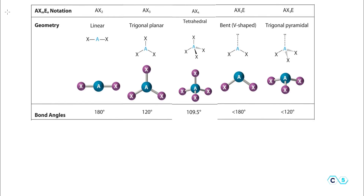To summarize the names of molecular and electronic geometry, we use a notation table. A represents the central atom, X represents terminal atoms, and E represents lone pairs of electrons. For example: AX3 gives trigonal planar, AX4 gives tetrahedral. For ammonia (AX3E), we have three atoms and one lone pair — ignoring the lone pair gives trigonal pyramidal. For AX2E, two atoms and one lone pair, ignoring the lone pair gives the bent geometry.